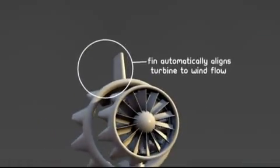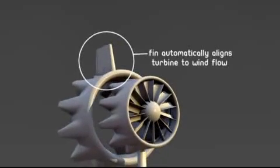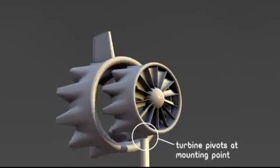Flowdesign's turbine can automatically align to the wind direction, like a kite string, and does not need motorized alignment.